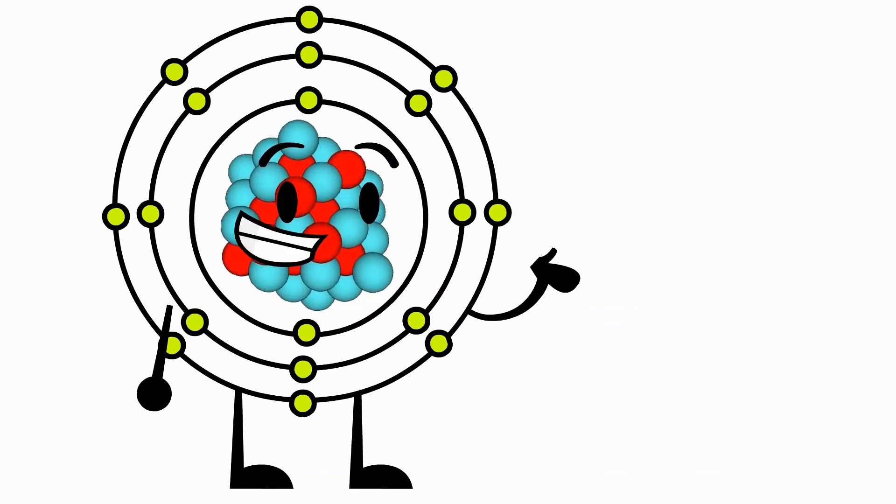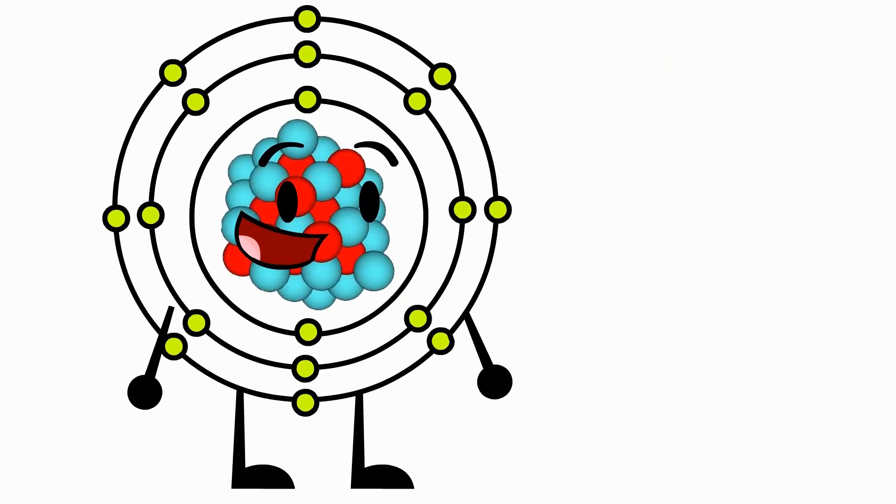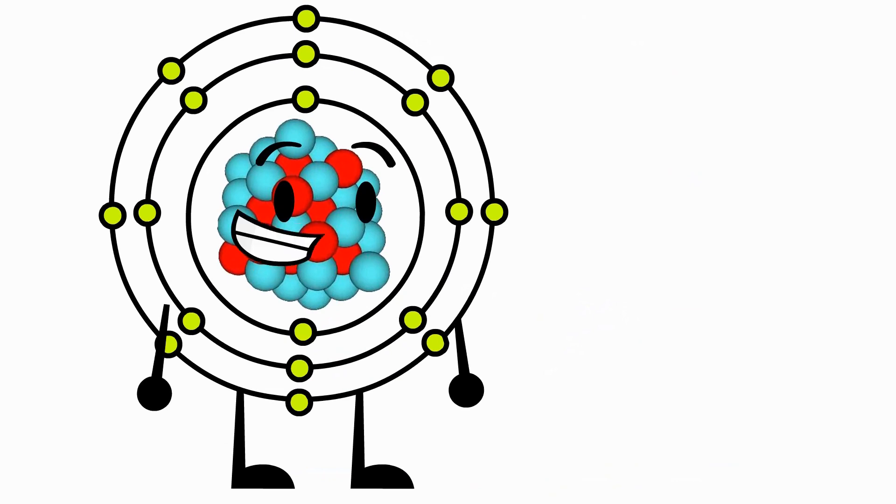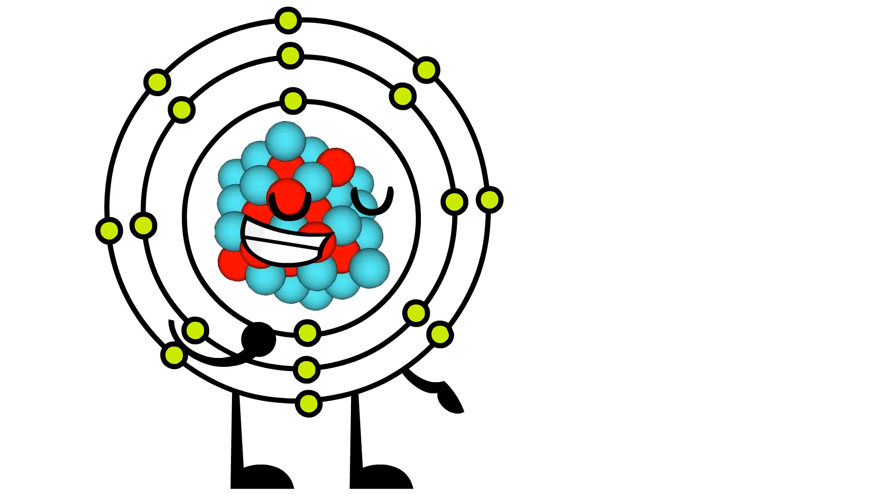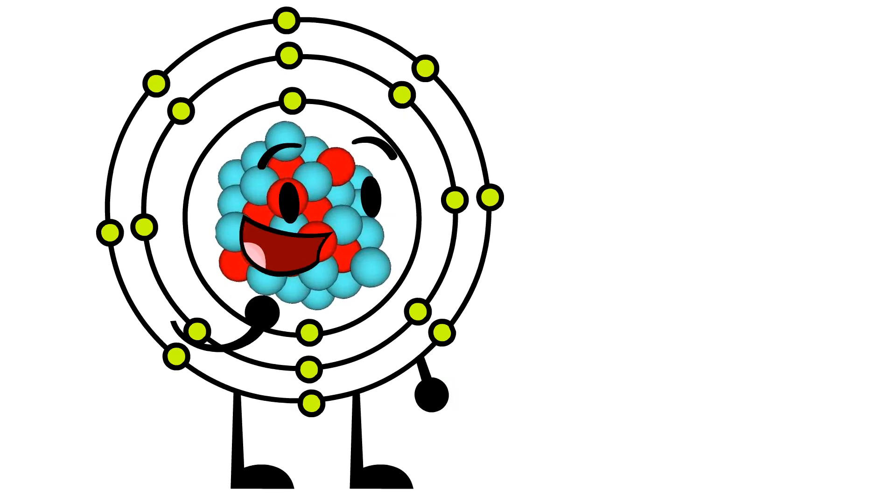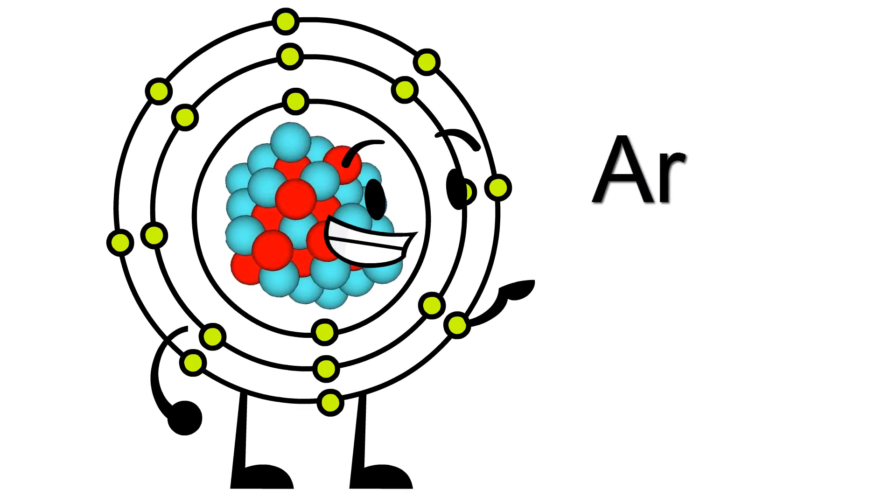Well Josh, thanks for writing to me. But please, call me AR because that's my chemical symbol. In case you don't know, a chemical symbol is the initials of the element's name. Since my name is Argon, my initials are capital A, lowercase r.